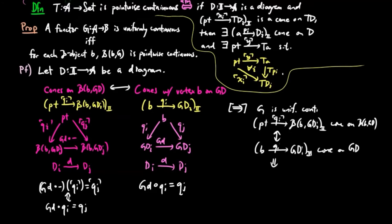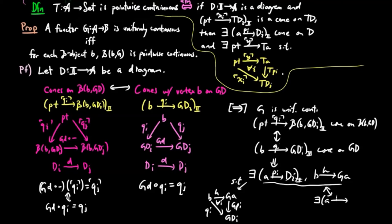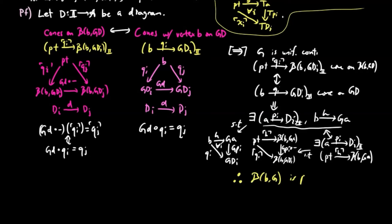By the uniform continuity of G, there exists a cone PI on D and a B morphism H from B to GA such that GPIH is equal to QI for each I. This existence condition then translates to there exists a cone PI on D and an element H such that the postcomposition of GPIH is equal to QI. Therefore, B,BG is pointwise continuous.